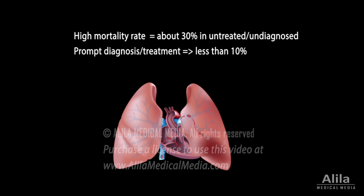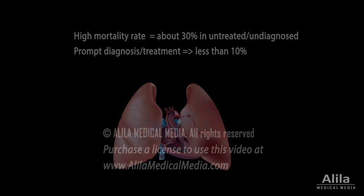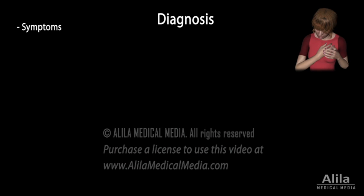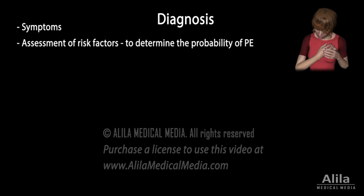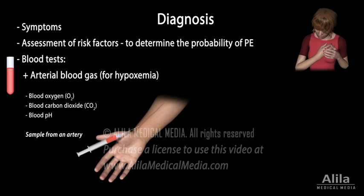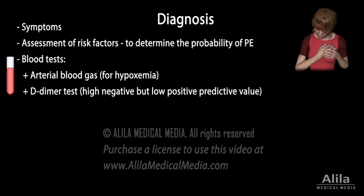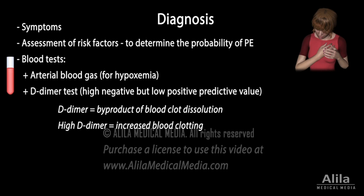Prompt diagnosis and treatment are critical to reduce the high mortality rate associated with pulmonary embolism. Diagnosis is based on symptoms, assessment of risk factors, and a number of tests. Blood tests usually include arterial blood gas, which measures blood oxygen and carbon dioxide level for presence of hypoxemia, and D-dimer, which measures the level of a byproduct of blood clot dissolution. A normal D-dimer value signifies a very low possibility of pulmonary embolism, but an abnormally high D-dimer level is not enough to confirm the condition.